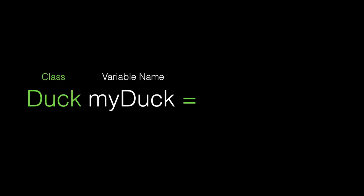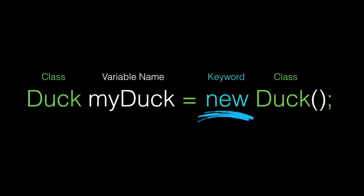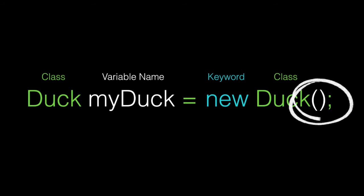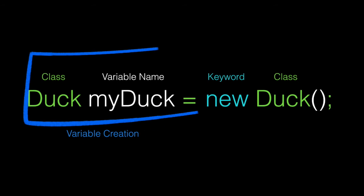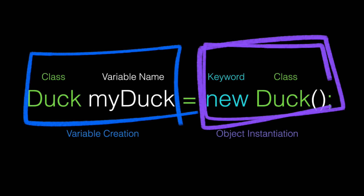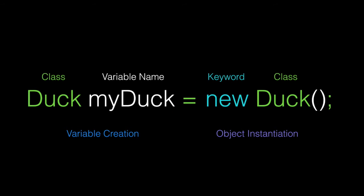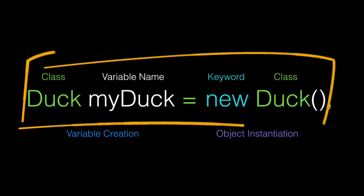We need to give our class variable an object value. To create an instance of a class, we use the keyword new followed by the name of the class. This creates a Java object in memory — it doesn't exist until we use the keyword new. We can pass attributes to our class and we'll cover that in another lesson. For now, we'll supply empty parentheses and close our Java statement with a semicolon. This statement creates a new Java object for our Java class in memory and assigns it to the variable. This half defines the variable and the other half creates the object. The assignment operator connects the two together. This statement says: define a variable called myDuck and create and assign a new duck instance to the variable.